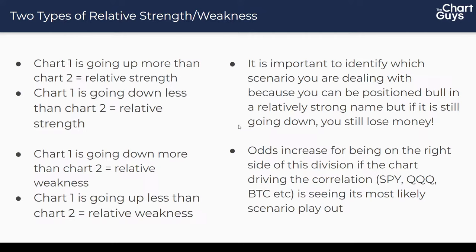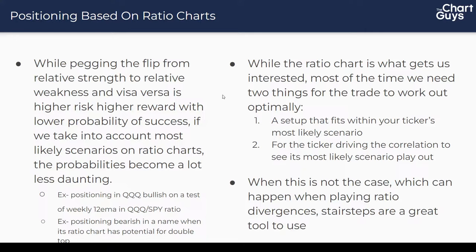Odds increase for being on the right side if the chart driving the correlation — whether it be SPY, QQQ, or Bitcoin — sees its most likely scenario play out. If you're trying to play QQQ bullish because it has relative strength compared to SPY, you need to see SPY also start to go up. It's very rare to see QQQ going up and SPY going down. You could have your QQQ/SPY ratio going up showing relative strength, but that's just because it's dropping less than SPY.